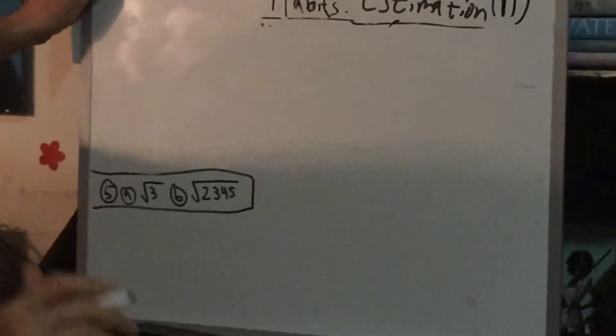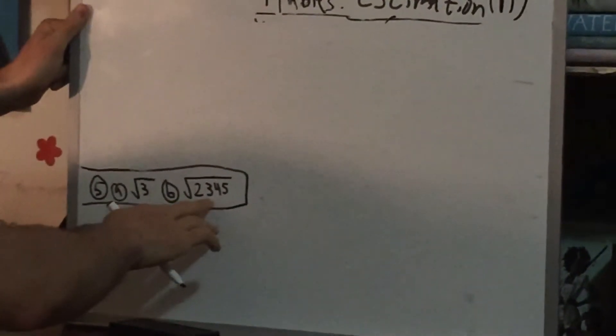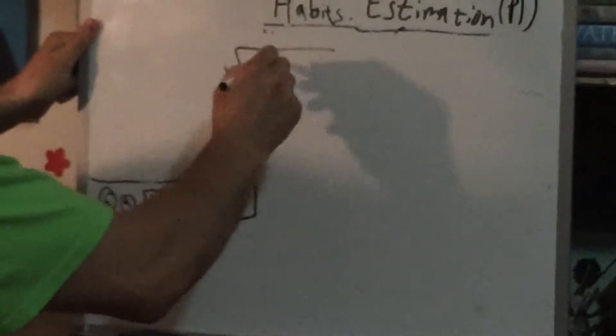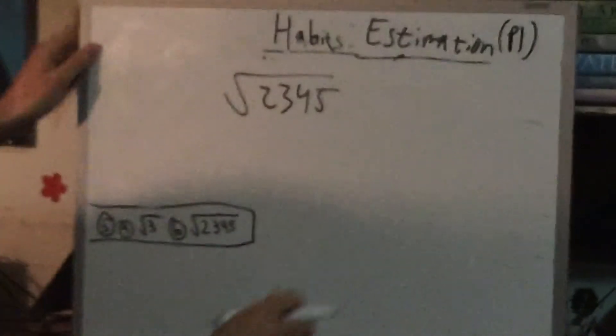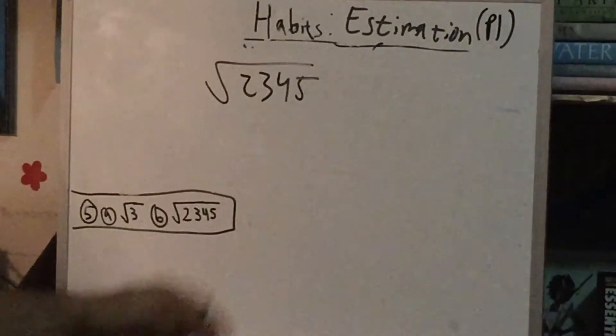So with that tangent, let's try this problem. Now the question here is find the nearest integer to the square root of 2,345. Now I just want to give you guys a quick way to do this.